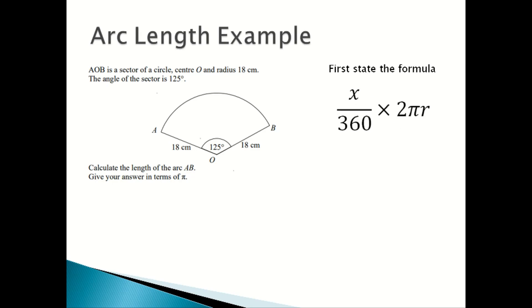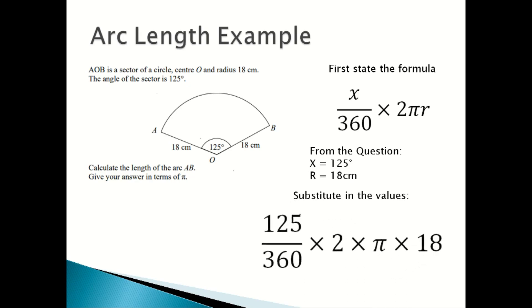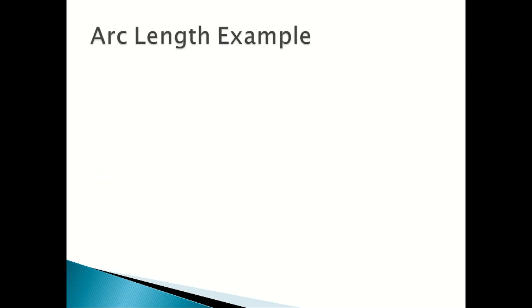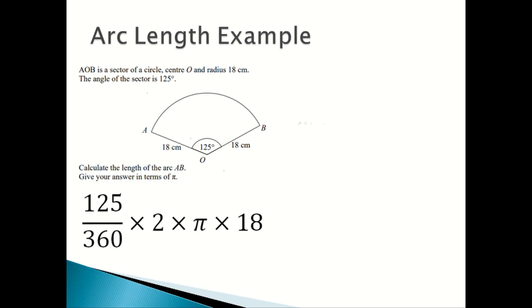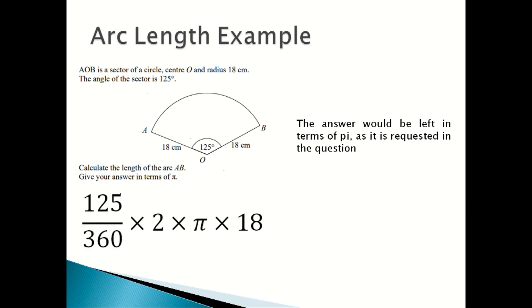First you state your formula, which is x over 360 times by 2πr. From the question, we know that x equals 125 degrees and r equals 18 centimetres. You substitute in the values and get 125 over 360 times by 2 times pi times 18. For this kind of question, the answer is left in terms of pi because the question states: give your answer in terms of pi. So the arc length of AB is 20 over 3 pi centimetres.